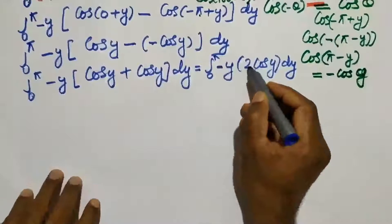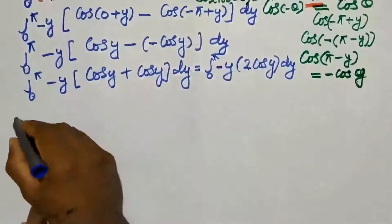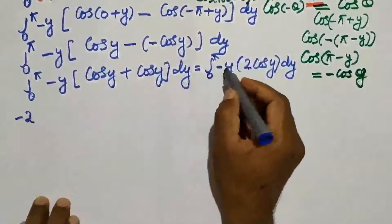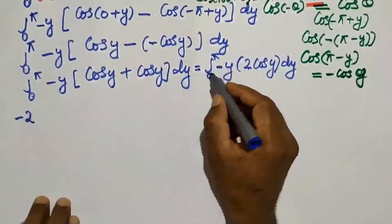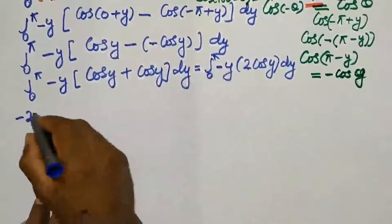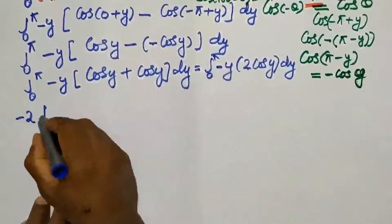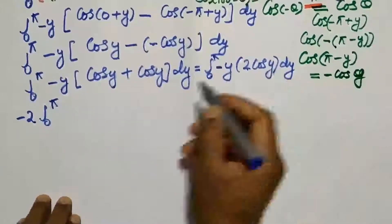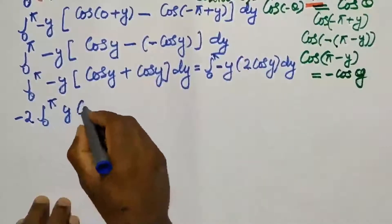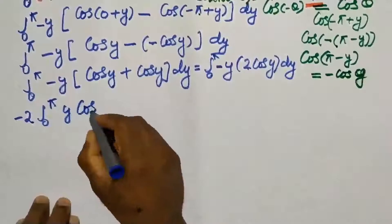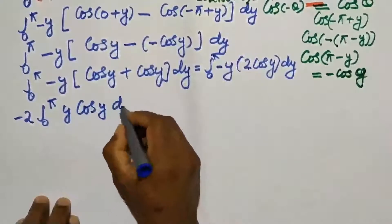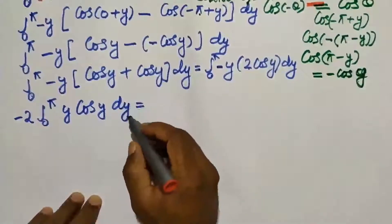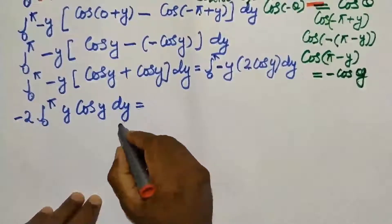This simplifies to the integral from 0 to pi of minus y into (cos(y) + cos(y)), which gives 2·cos(y). So we have minus 2 times the integral from 0 to pi of y·cos(y) dy. Next, we integrate with respect to y.